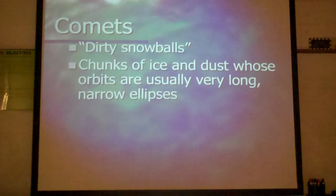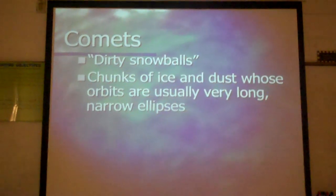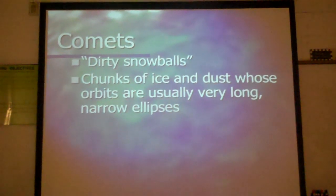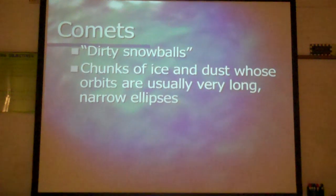Remember an ellipse is the shape of an oval, not a circle shape. The comets are pieces of ice and dust that are still in space, traveling around the sun, and we call them Dirty Snowballs for this reason.